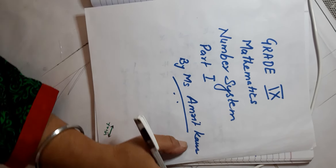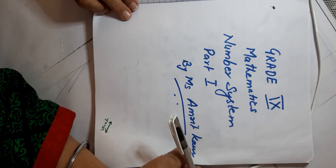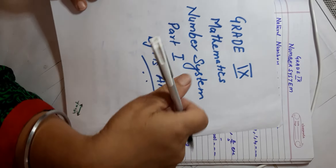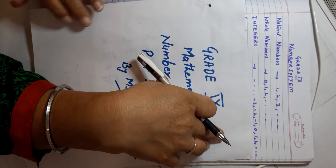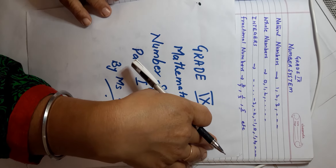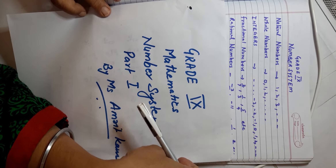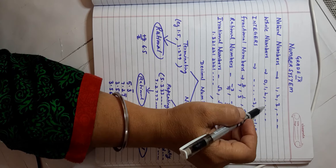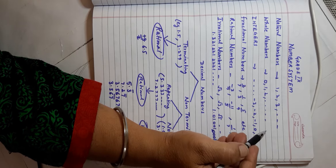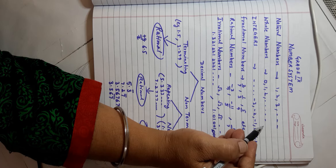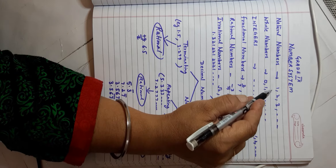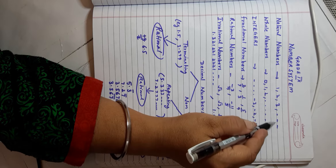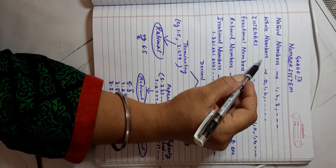Hello students, welcome to Grade 9 Mathematics: Number System, Part 1. Today we will be discussing various types of numbers. We will also discuss irrational numbers. To start with, I'll begin with natural numbers. These numbers naturally come to us when we want to start counting — number 1 comes first. Since they start naturally, we call them natural numbers: 1, 2, 3, 4, and so on.